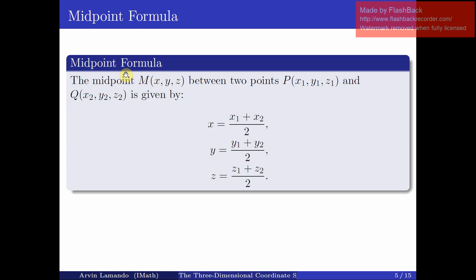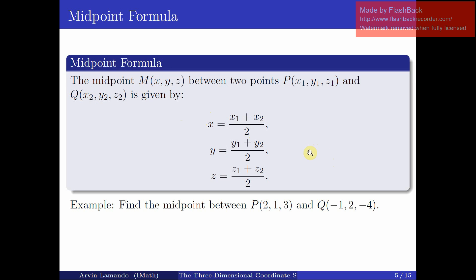Let us now continue with the midpoint formula. The midpoint formula given here is just a very simple generalization of the familiar midpoint formula we know for R2. The midpoint M between two points P and Q is given by the following formula: the X coordinate of the midpoint M is given by the sum of the X coordinates of P and Q divided by two. A very similar formula holds for Y and Z.